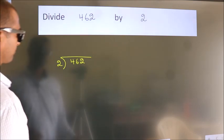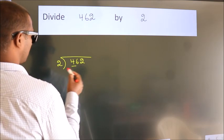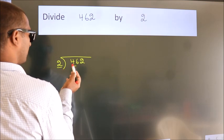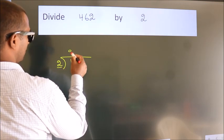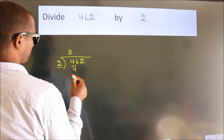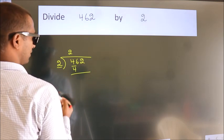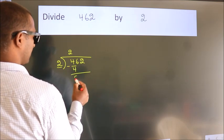Next, here we have 4. Here 2. When do we get 4? In 2 table. 2 times 2 is 4. Now, we should subtract. We get 0.